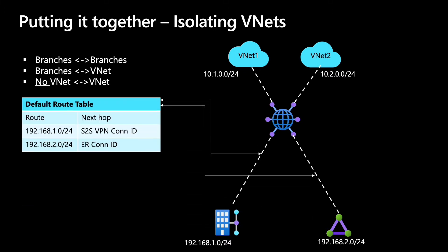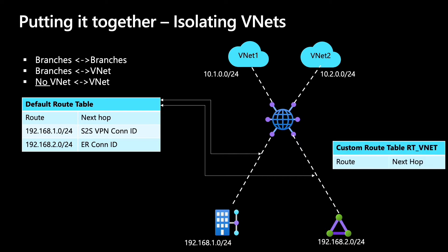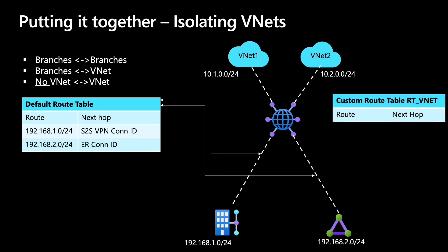As we know, there's the default route table, which is associated to all these branch connections. Branches propagate their routes into the default route table.